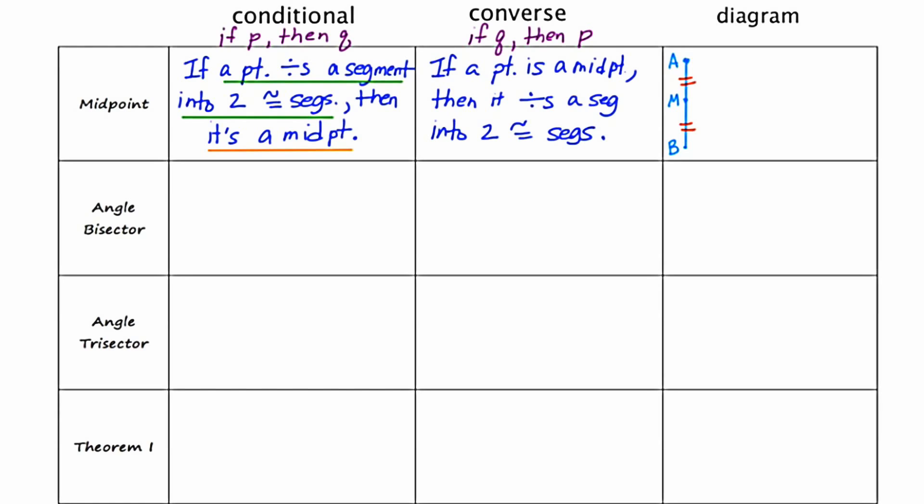Suppose you were walking through the geometry forest and you stumbled upon segment AB, and there is a point in the middle of AB called M, and it splits that segment into two equal, or two congruent, segments. AM and MB are congruent according to the tick marks. If that scenario happens, then M is called the midpoint. So the conclusion we could make is that M is the midpoint of segment AB.